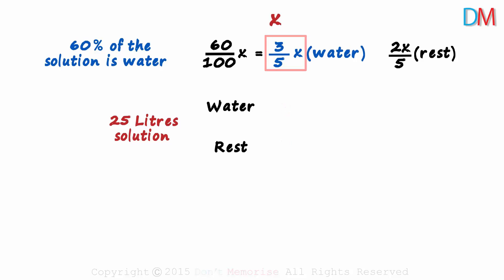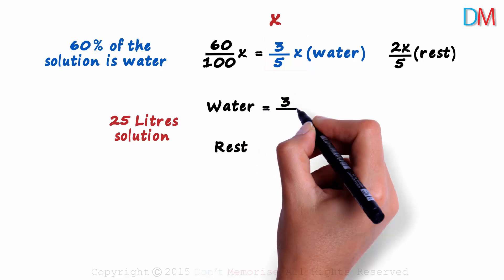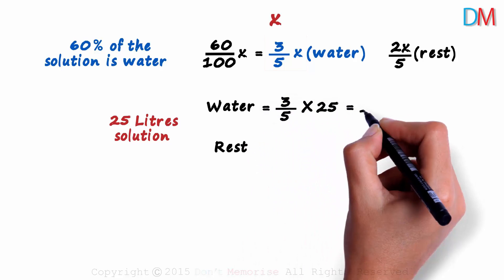Water will be 3 fifths of the solution. That will be 3 over 5 times 25. That will be 15 liters.